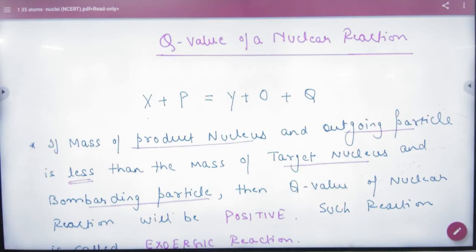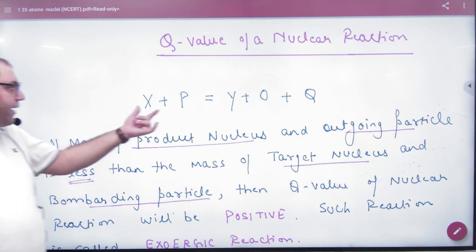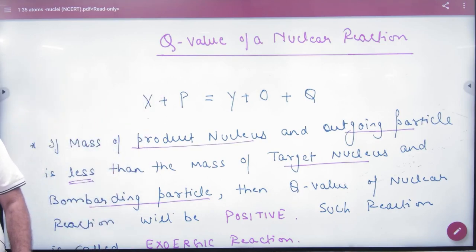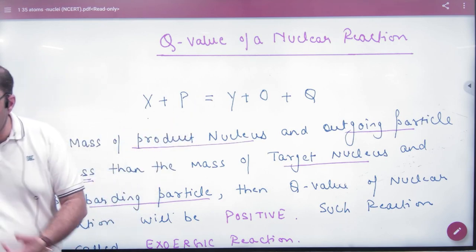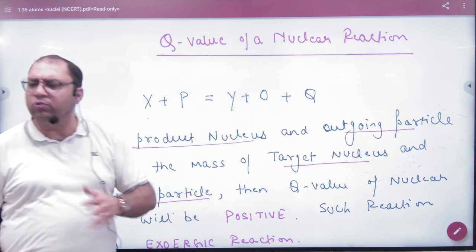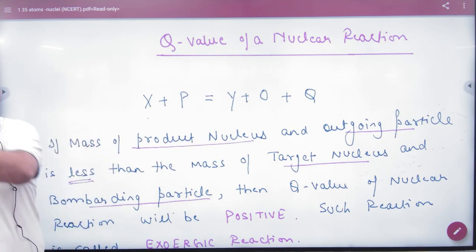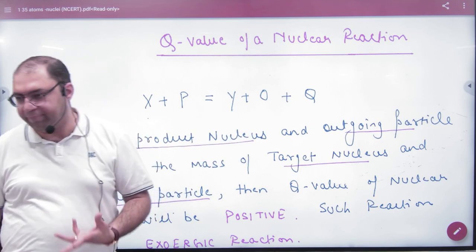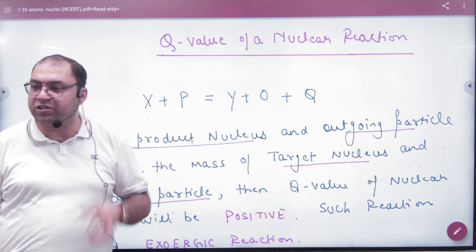The Q value of a nuclear reaction: if you have reactants X and P, where X is bombarded on P, then a new atom Y is released along with an outgoing particle — whether it is an electron, alpha, or beta particle. Q is the energy released in the reaction.